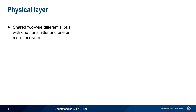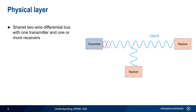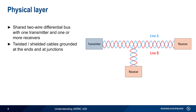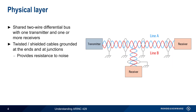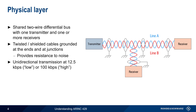Let's start by looking at the physical layer and the bus wiring itself. ARINC 429 specifies a shared two-wire differential bus with one transmitter and one or more receivers. The two wires, called line A and line B, are both twisted and shielded, and they are normally grounded at the ends and at junctions. This helps to reduce the possibility of externally generated noise corrupting signals on the bus. Messages are sent unidirectionally over the bus at rates of either 12.5 kbps, called the low rate, or 100 kbps, which is the high rate.